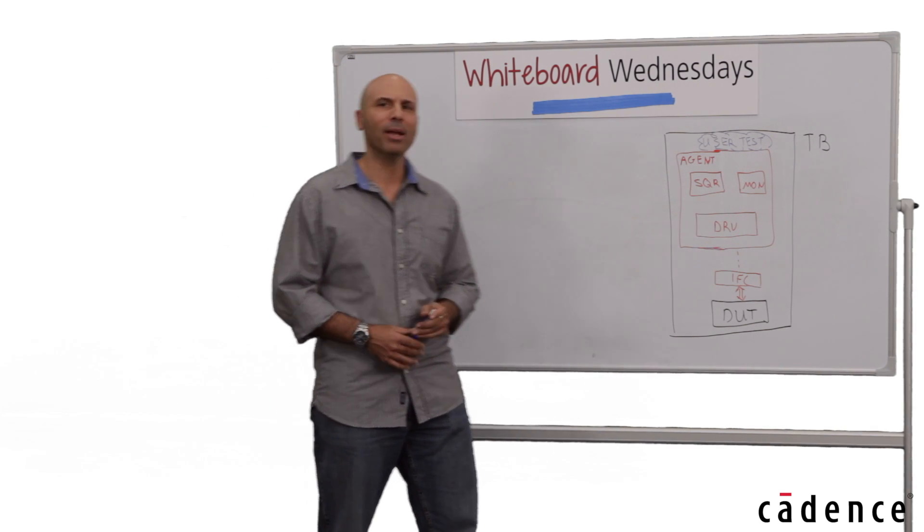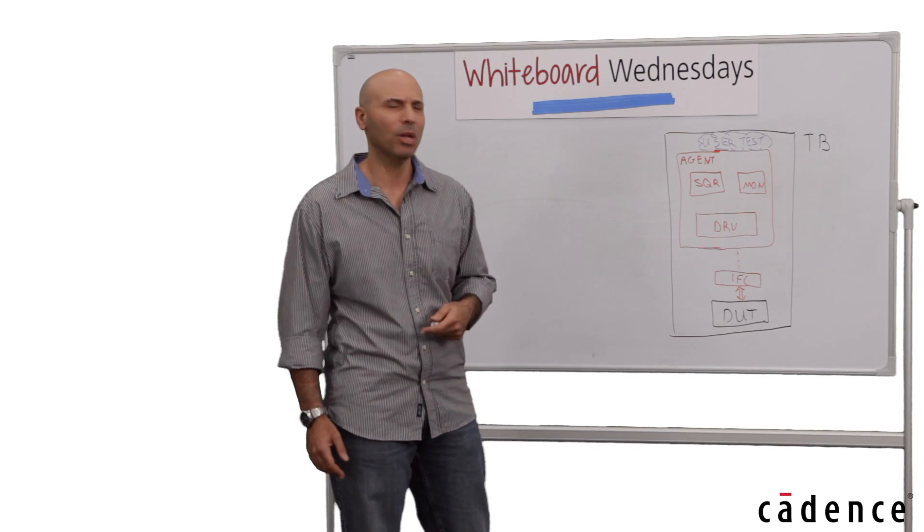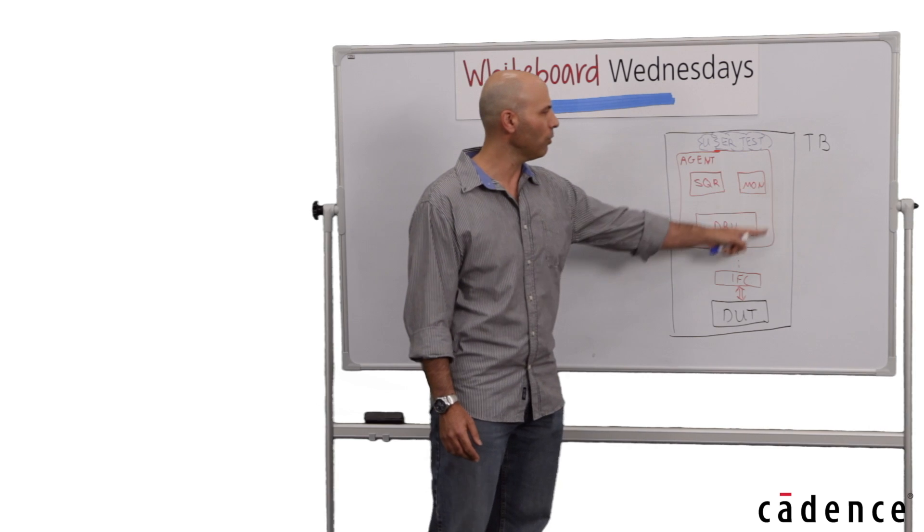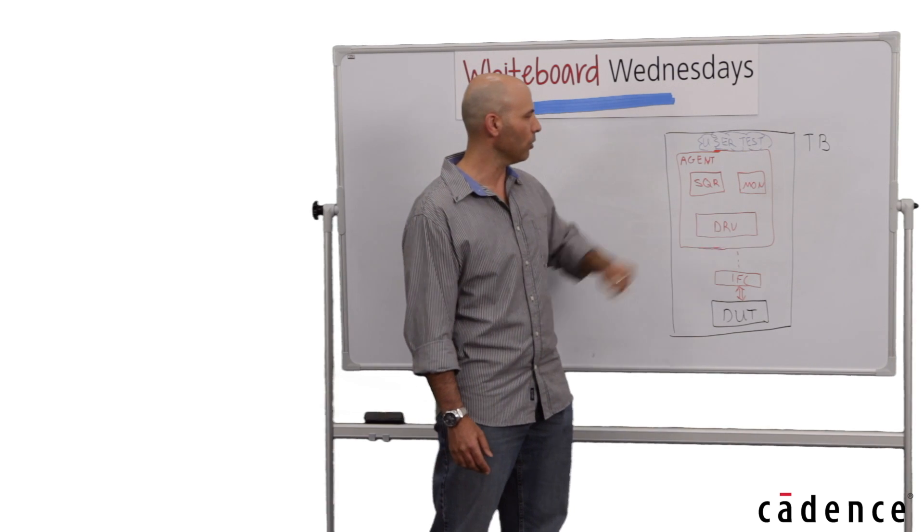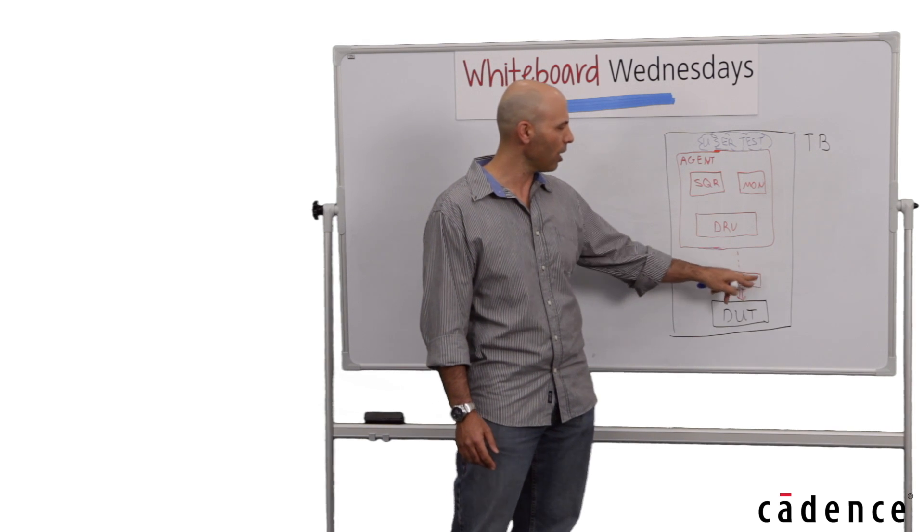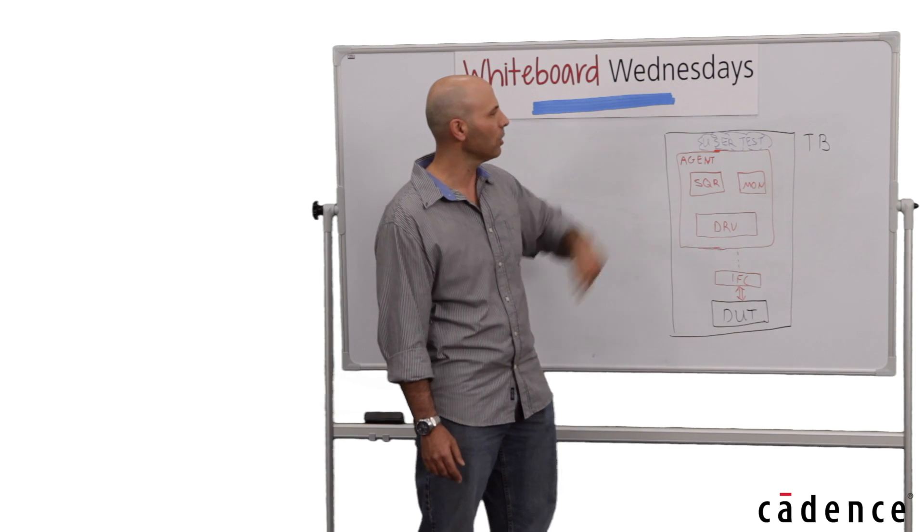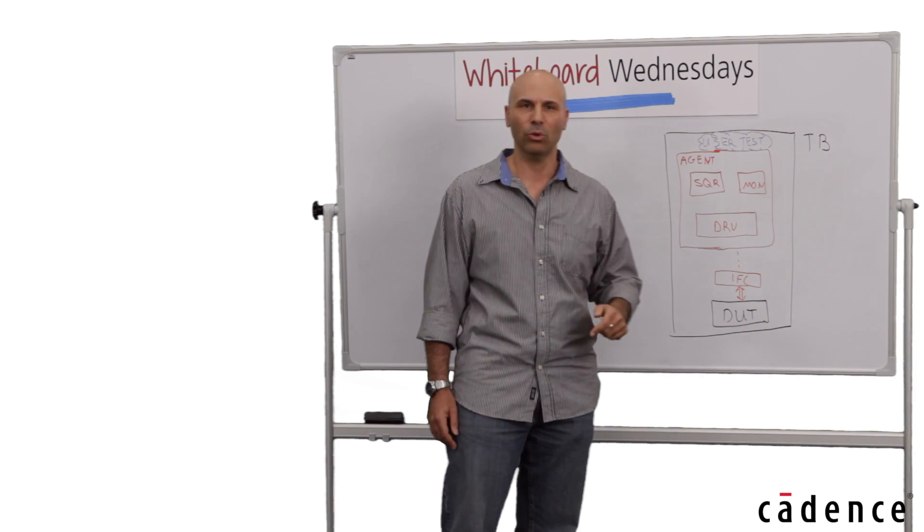Here on the whiteboard, we see a typical, very simplified verification environment created for a simulation VIP. You have your UVM agent, you have your driver here, which sends the transactions to the DUT, and you have an interface, a SystemVerilog interface that is connected to the DUT. On top of the agent, you have your user test that you write.